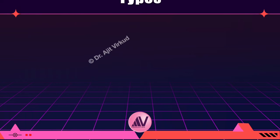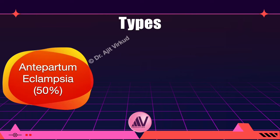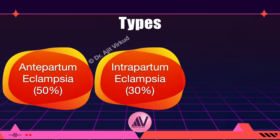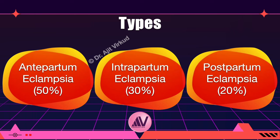As far as timing of occurrence is concerned, preeclamptic patients present with a seizure during pregnancy in 50 percent of cases — this is called antepartum eclampsia. About 30 percent of these patients first present with a convulsion during labor, referred to as intrapartum eclampsia. The more important subset are those who present with a convulsion after delivery — the so-called postpartum eclamptics — who account for the remaining 20 percent of cases.